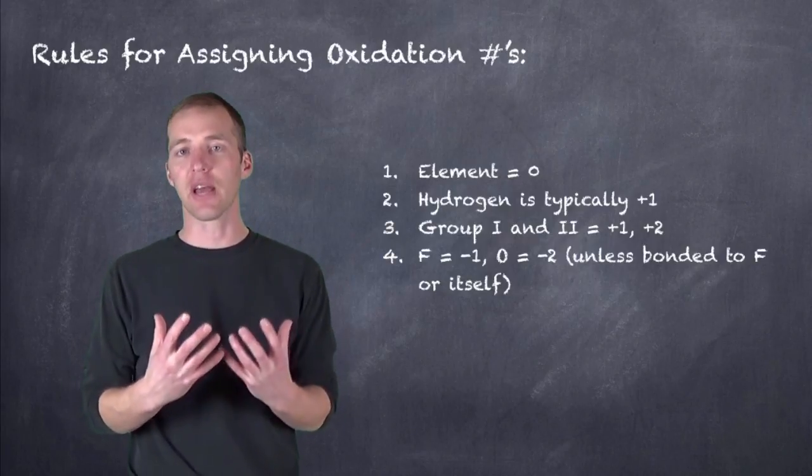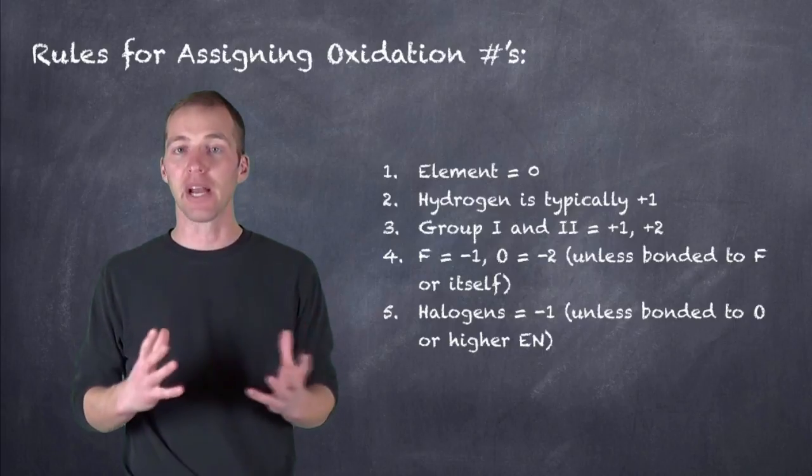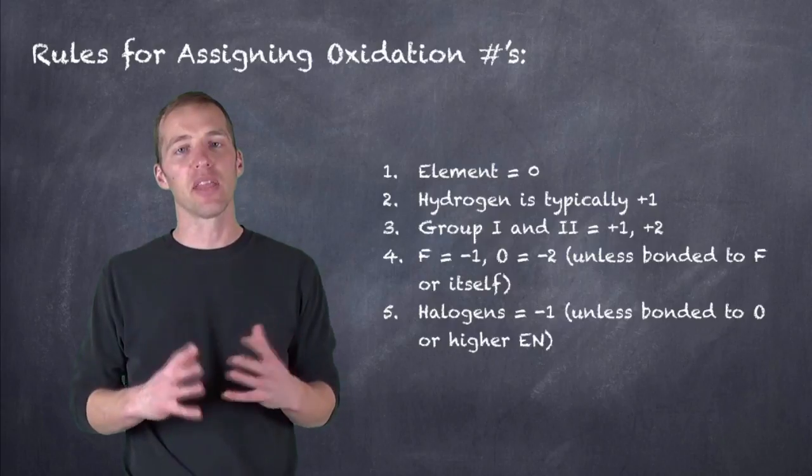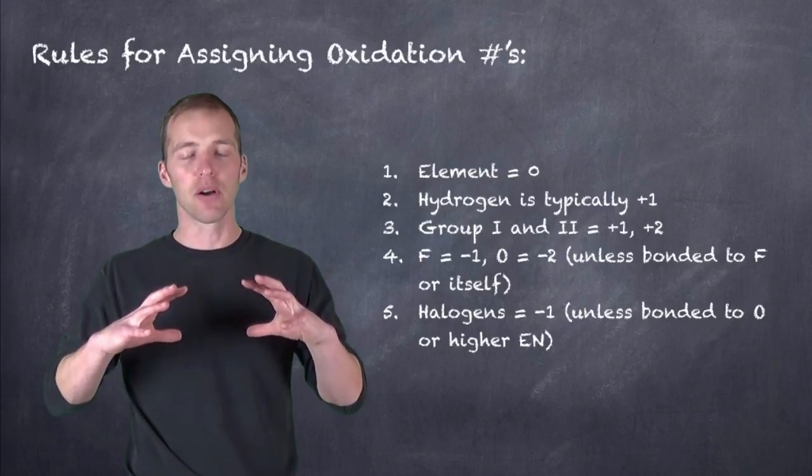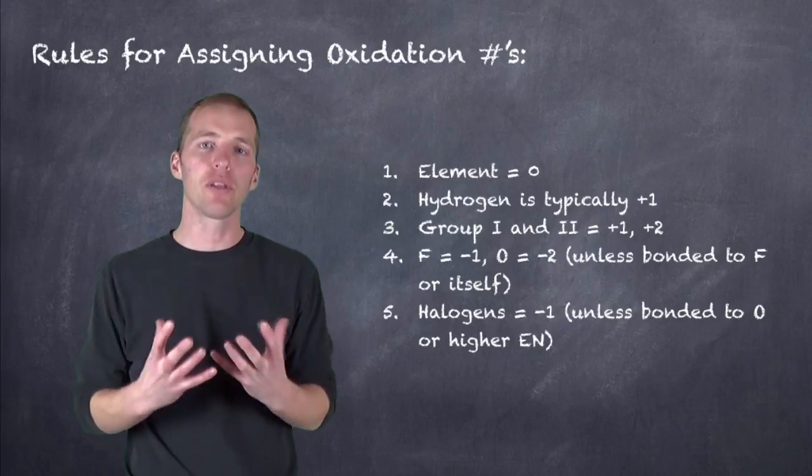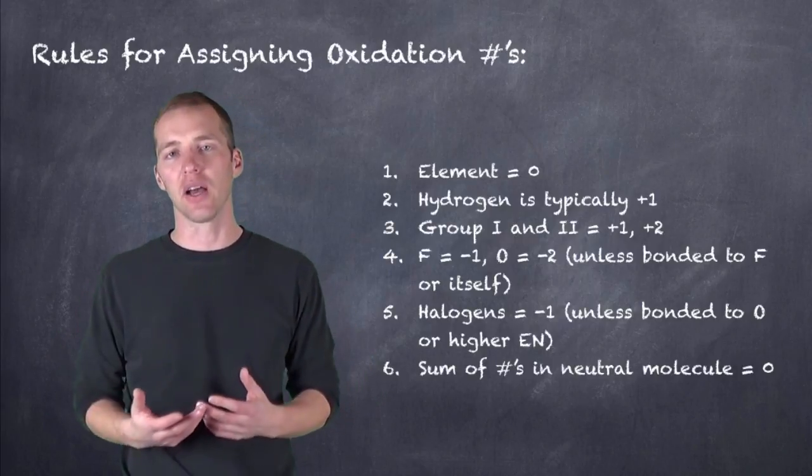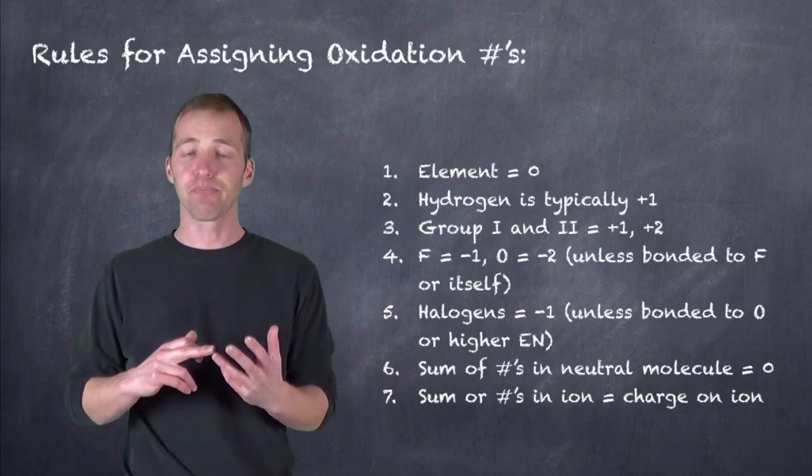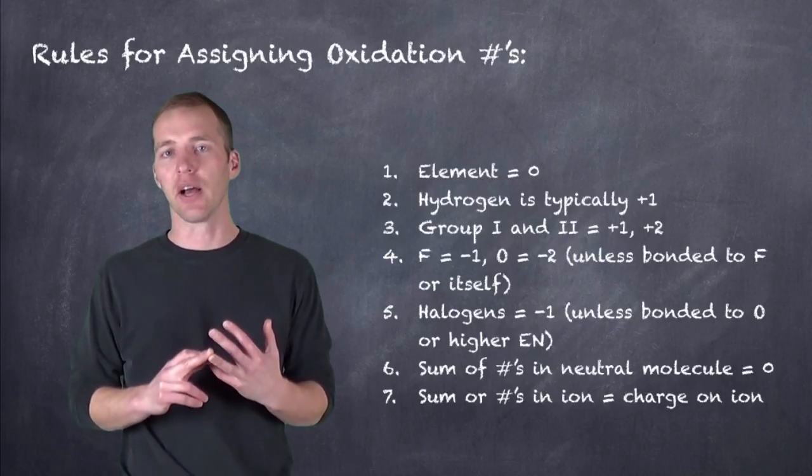So halogens, the rest of the halogens, the rest of the group seven elements that aren't fluorine, are going to be minus one unless they are bonded to oxygen or fluorine. The other important thing is that ultimately all of your oxidation numbers have to equal the charge on the molecule or on the ion. So if it's a neutral molecule, charge has to equal zero. If it is a charged ion, it has to equal the charge on the ion. So again, if this was say cyanide, which is a minus one charge, the oxidation numbers of the carbon and the nitrogen would have to equal minus one.